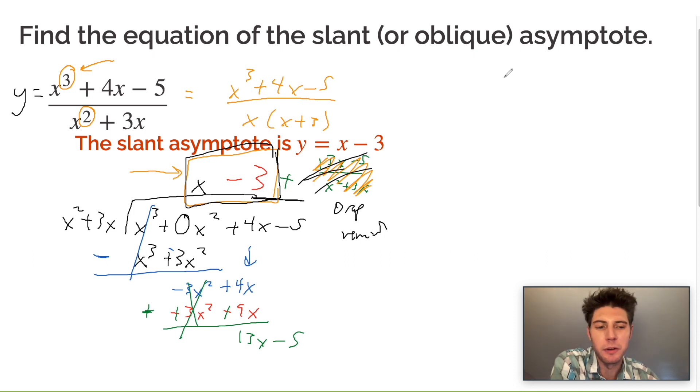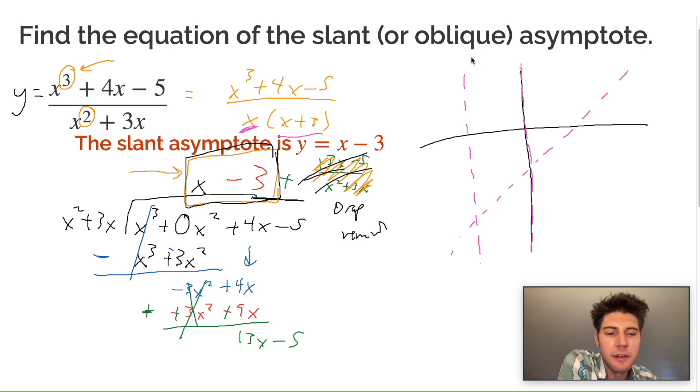But I'm going to try to explain why you drop the remainder. So first, if we're graphing it, we're going to find our asymptotes. So we have a vertical asymptote at 0. We have a vertical asymptote at negative 3. And then we have our slant asymptote y equals x minus 3. So it's going to look something like this. So then after a little bit of work, we'll see that our graph looks something like this. And it's hugging these asymptotes.